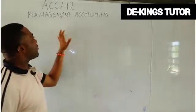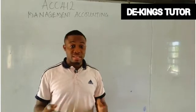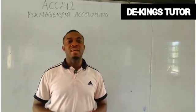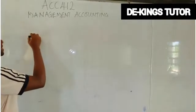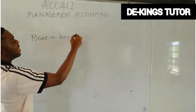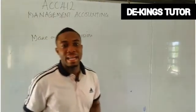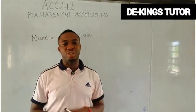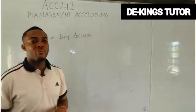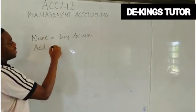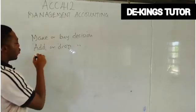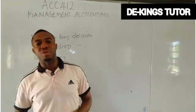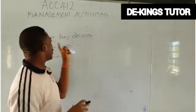The aspect of Management Accounting we want to see is relevant decision as regards cost — a relevant decision as regards cost. She specifically made a request for us to talk about the make or buy decision. In my next video, I will start from scratch to treat all of that. We have different decisions as regards cost: we have add or drop, make or buy, outsourcing, and utilization of resources. But today, on this video, we focus on make or buy decision.